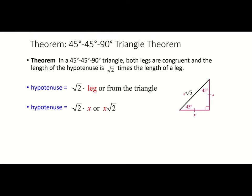The first triangle we're going to look at is a 45-45-90 triangle. In a 45-45-90 triangle, both legs are going to be congruent because the angles opposite them are the same measure. We'll call those X, and the length of the hypotenuse is always going to be the square root of 2 times the length of a leg — so X times square root 2.